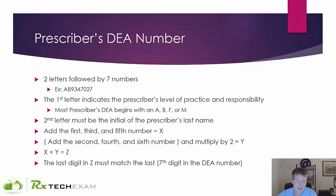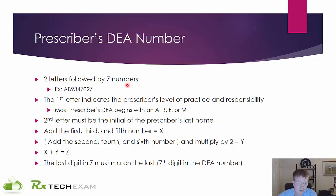Here's where it gets a little bit tricky. You're going to add the first, third, and fifth digits. In our example, 9, 4, and 0 gives us 13. Then add the second, fourth, and sixth digits — 3, 7, and 2 — to get 12, and multiply by 2, giving 24. The last digit of the DEA number must match the last digit of the sum of those two results. 13 plus 24 equals 27. The last digit is 7, and the last digit in this DEA number is 7 — so you're good to go.